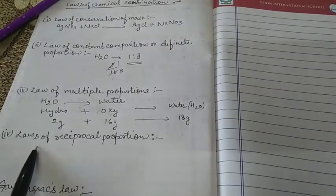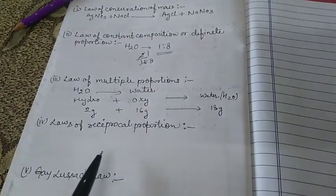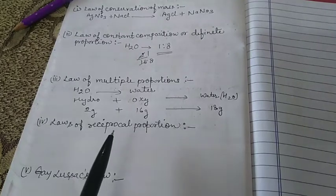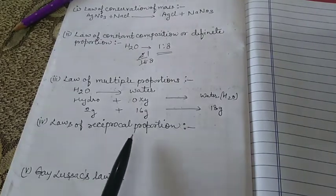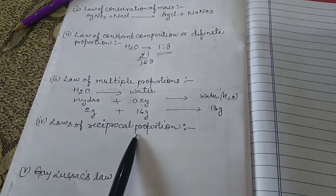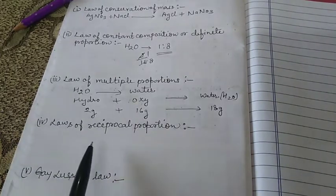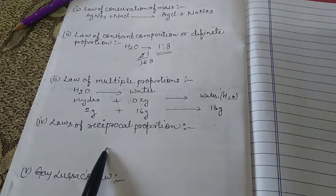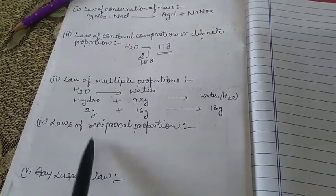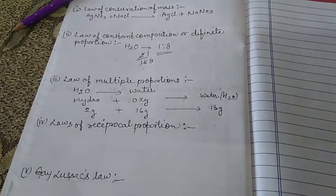The next one is the law of reciprocal proportion. It states that when two different elements combine separately with the fixed mass of a third element, the ratio in which they do so will be the same or a simple multiple of the ratio in which they combine with each other.